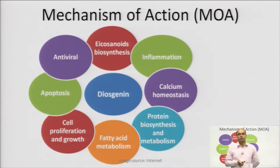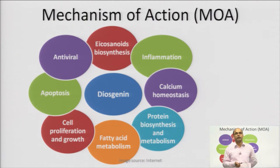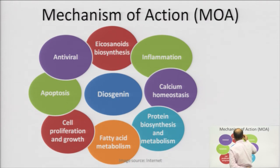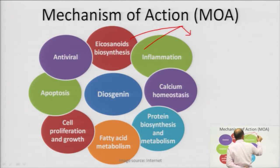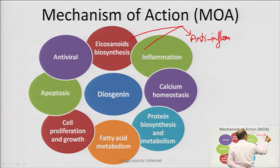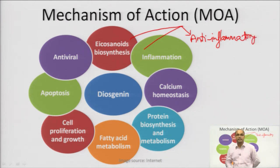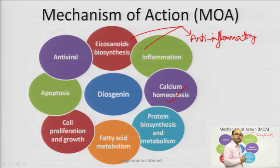Looking at the mechanism of action — because we are studying the phytochemical individually, we should know how it acts on the body. It has got tremendous activity. It has a role in eicosanoid biosynthesis and helps in the action against inflammation, so it acts as an anti-inflammatory agent. The compound diosgenin is acting as anti-inflammatory and also helps in homeostasis or management of calcium inside the body.